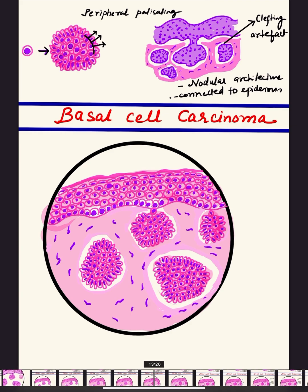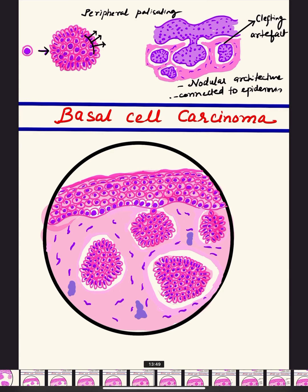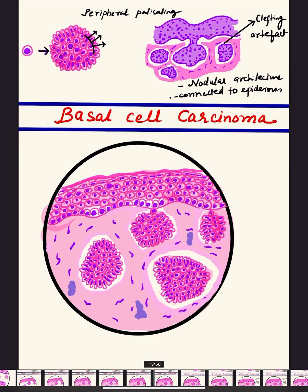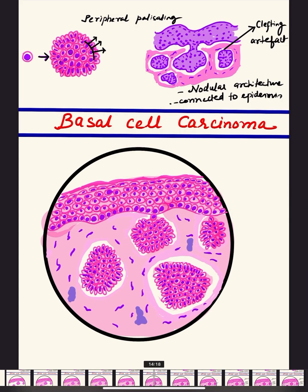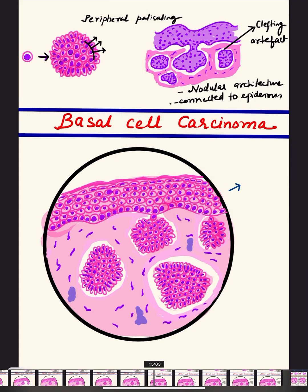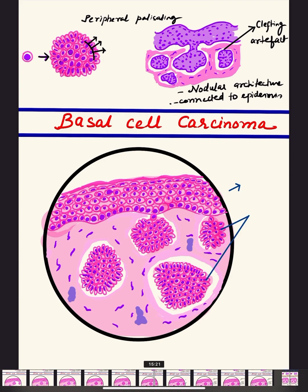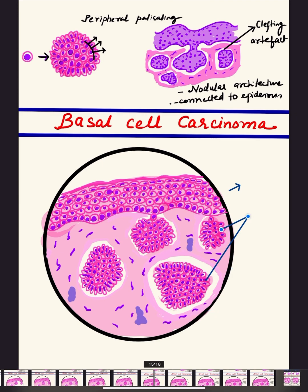In BCC we can also have mucoid deposits, representing mucoid degeneration of the stroma. These blue blobs in the diagram signify the mucoid areas. This completes the diagram of BCC. Now we proceed to labeling — the epidermis, the tumor nest, and the clefting artifact.